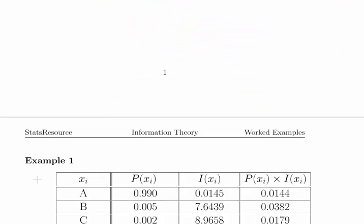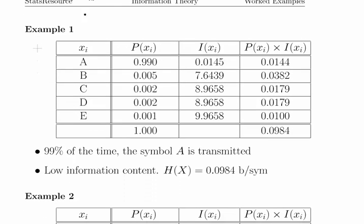I have seven of these examples. I'll go through them fairly quickly. Here are my five symbols, and here is the relative probability of each symbol. In this starting example, 99% of the time the signal sends symbol A. We expect A 99% of the time and then the other four symbols will just pop up periodically.